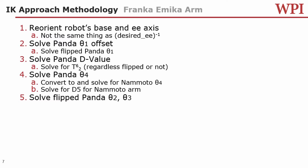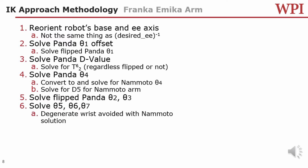Now, once we have thetas 1 and 4, we can then solve for the flipped Panda's theta 2 and 3. Now that we have solved for thetas 1 through 4, we can then solve for the kinematically decoupled wrist. This means we can solve for thetas 5, 6, and 7. Also, using our inverse kinematics methodology, we do not have to worry about a degenerate wrist solution.